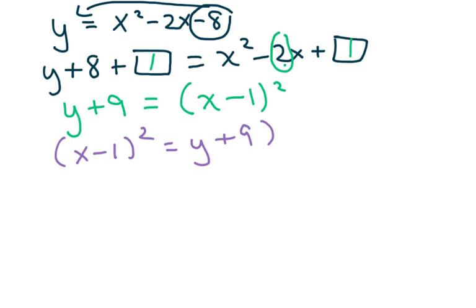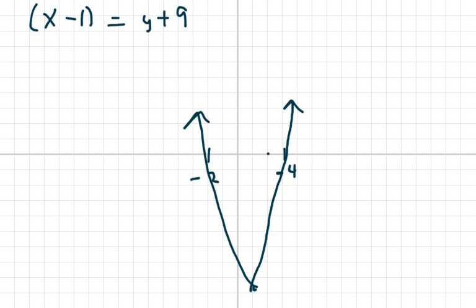So we get y plus nine equals x minus half of two is one squared. Now they usually write this reverse, so I'm just going to move this around. And we have all kinds of information here. Basically my vertex, parabolas don't have a center, is one comma negative nine. It has focus and things like that, but I just sketched the graph over here and it opens up because this is the wide part. And I just kind of sketched it just so you could see it.